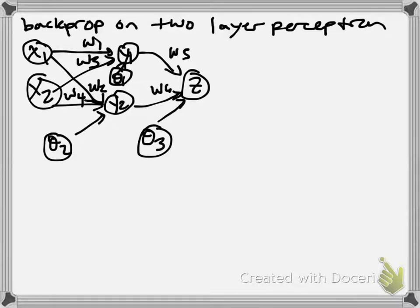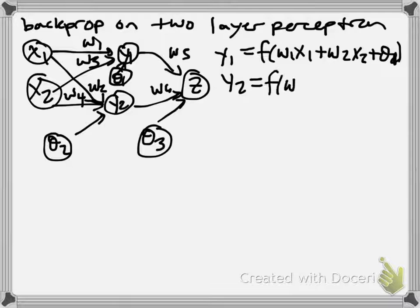Okay, so what are our equations for this model? Well, we have Y1 is equal to F of W1X1 plus W2X2 plus theta 1. And then, Y2 equals F of W3X1 plus W4X2 plus theta 2.